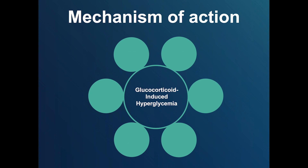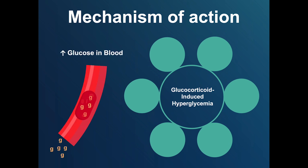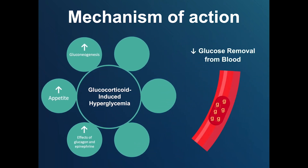Glucocorticoids cause hyperglycemia through several different mechanisms. They add glucose into the bloodstream by increasing gluconeogenesis — the process through which the liver produces glucose — increasing appetite and carbohydrate intake, and enhancing the effects of hormones such as glucagon and epinephrine, which promote glucose production. Glucocorticoids also decrease glucose removal by inhibiting the production and secretion of insulin and by decreasing insulin sensitivity, known as insulin resistance. Insulin resistance impairs the ability of muscle and other tissues to take up and use glucose, causing blood glucose levels to rise.